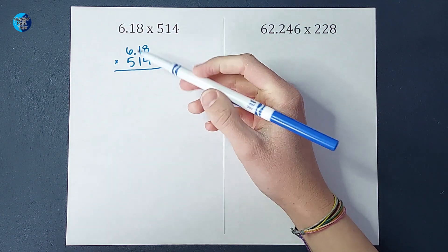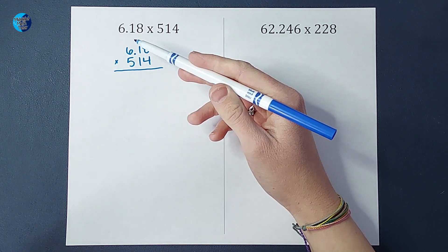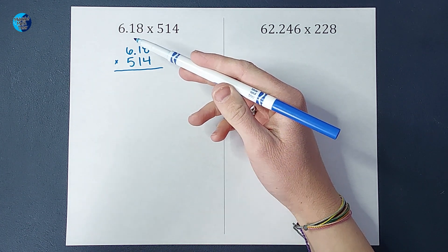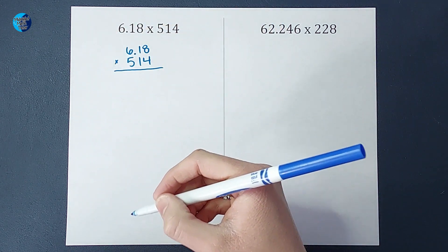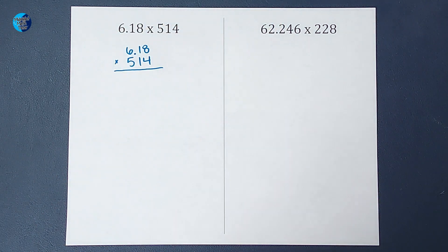Now I'm going to go ahead and multiply this like normal. And like I said, ignore the decimal for a minute. So I'm going to speed this up, multiply it really fast, and then we'll talk about what to do with the decimal.